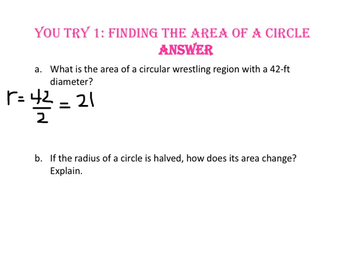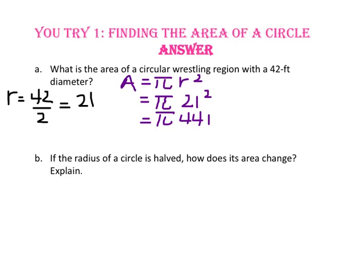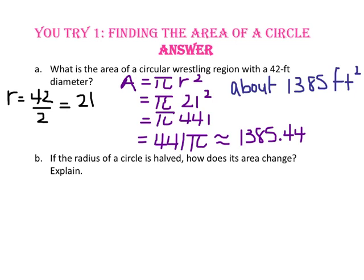To find the area of a circle, we use pi times the radius squared. Since the radius is 21 feet, we square 21 to get 441, then multiply by pi for 441π square feet. Using the calculator, 441 times pi gives us approximately 1,385.44 square feet, or about 1,385 square feet.